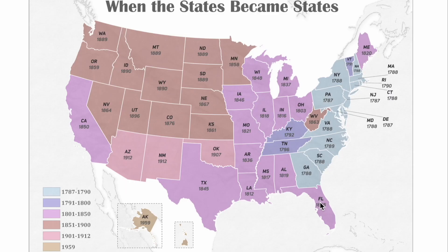The next map shows when each state became a state. The key breaks everything down by time ranges — from three-year ranges to fifty-year ranges. Most of the East Coast was part of the original colonies, becoming states from 1787 to 1790, with Delaware technically being the first state. Then Kentucky, Tennessee, and Vermont followed from 1791 to 1800.